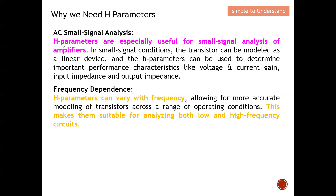Another reason is AC small signal analysis. H parameters are especially useful for small signal analysis of amplifiers. In small signal conditions, the transistor can be modeled as a linear device, and the H parameters can be used to determine important performance characteristics like reverse voltage gain, current gain, input impedance, and output impedance. So if we know the H parameters, we can easily determine all of these characteristics.